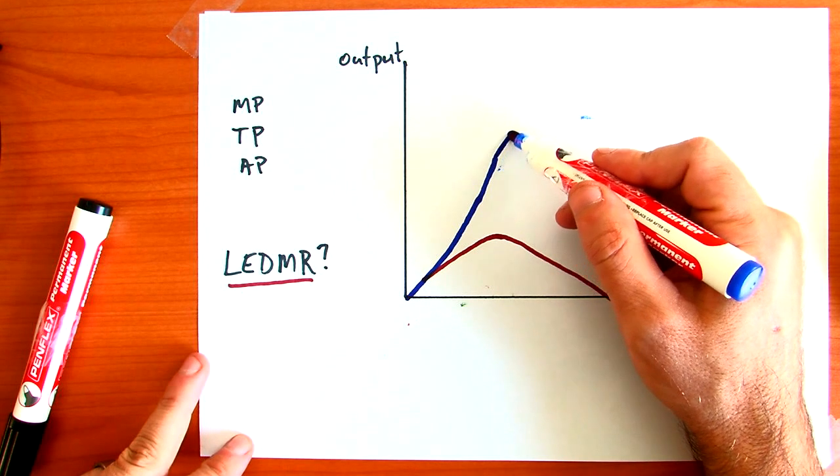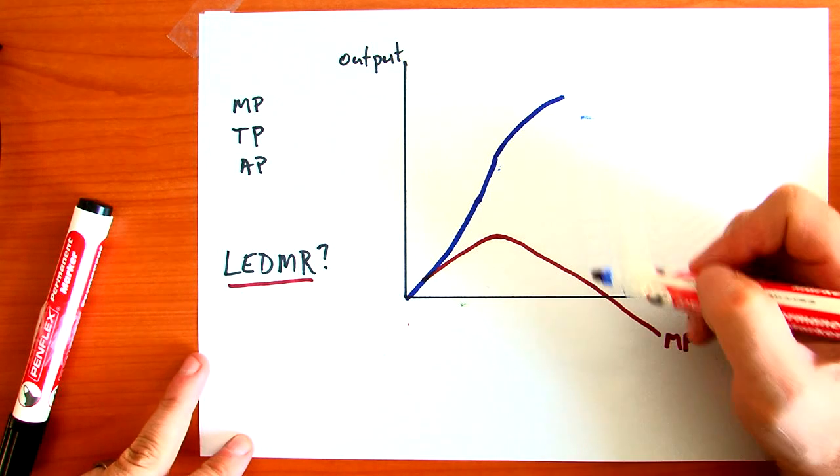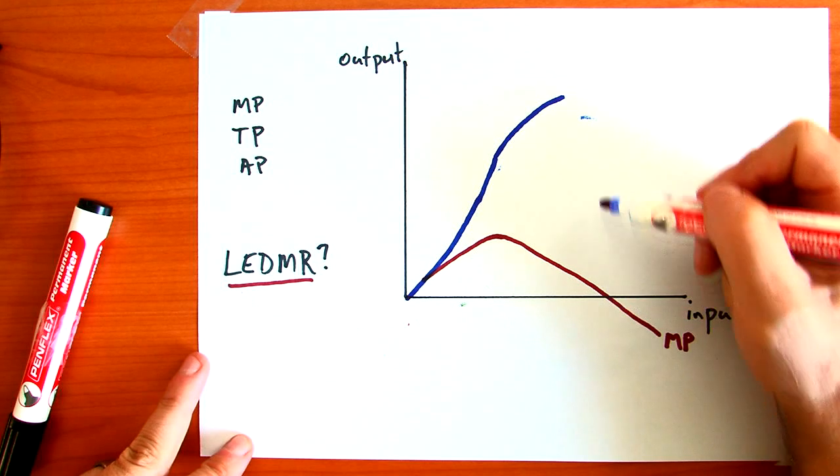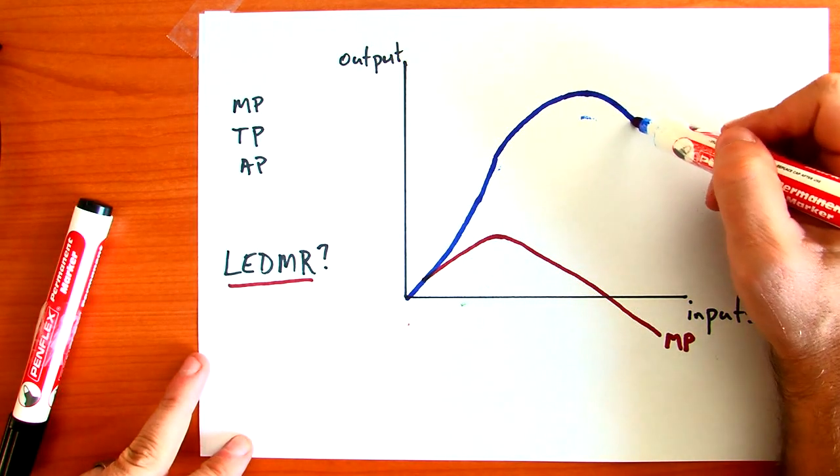we see still total product will increase, but at a lower and lower rate. Until it gets to the quantity at which marginal production is zero, and at that point, we're going to see that total production begins to fall.